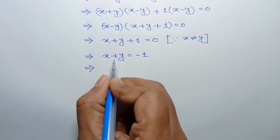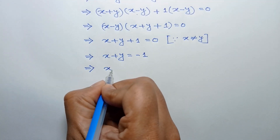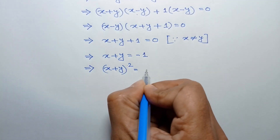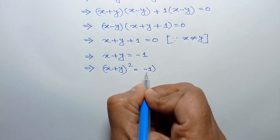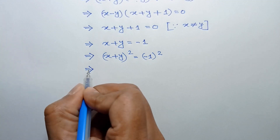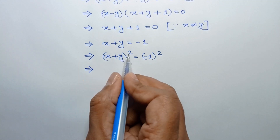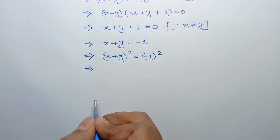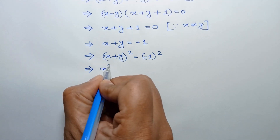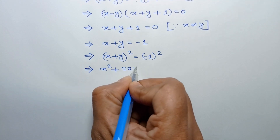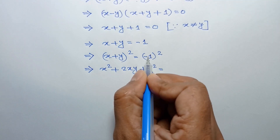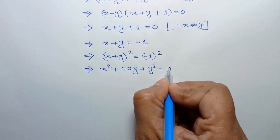Taking the square of both sides, we write (x plus y) whole squared is equal to (-1) squared. Expanding using the formula (a plus b) squared equals a squared plus 2ab plus b squared, we get x squared plus 2xy plus y squared is equal to positive 1.